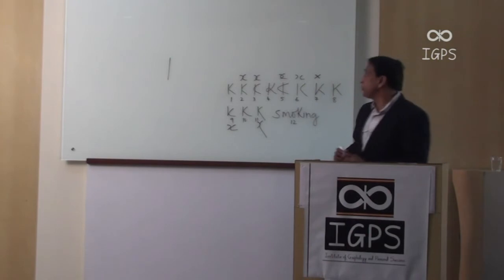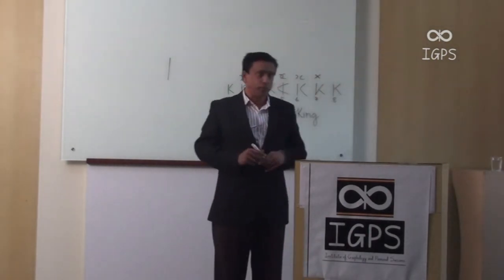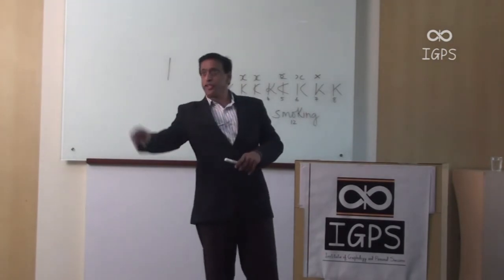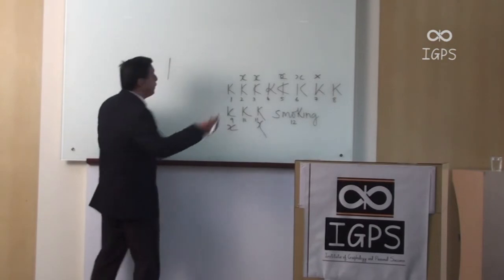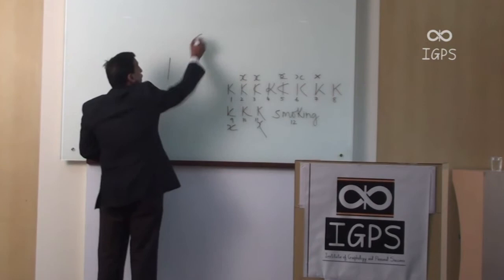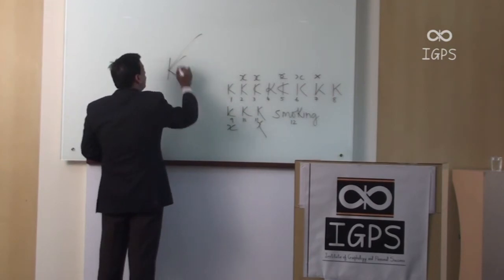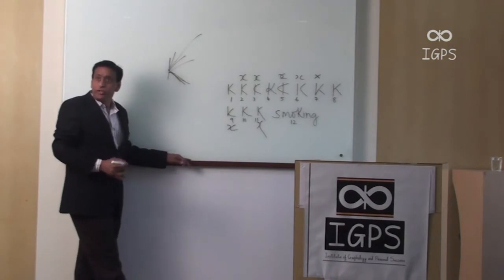So this style has got nothing, no base. If somebody stood and did this way or did this way, there was no base, there was nothing. Now here also there is no base. This is a stem and no base. I could go here or I could go here, I could go anywhere. There is no limit.